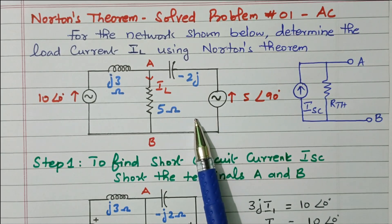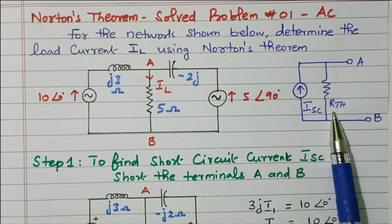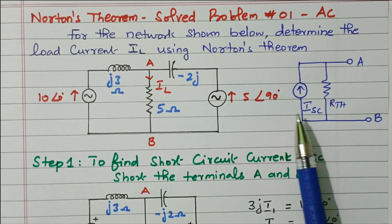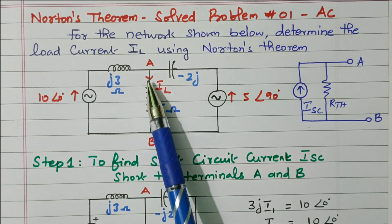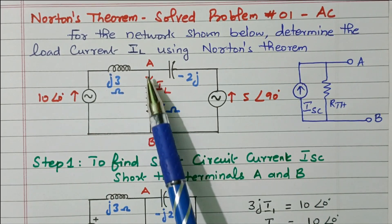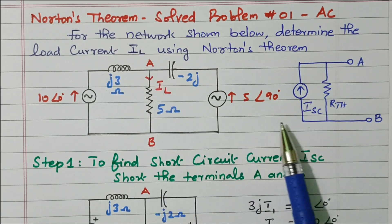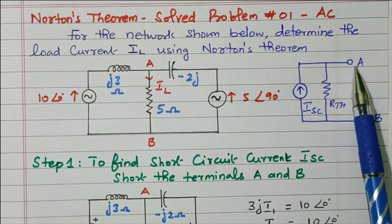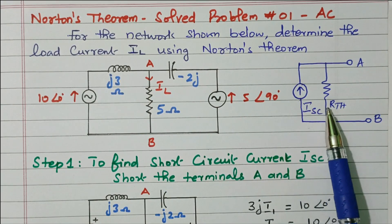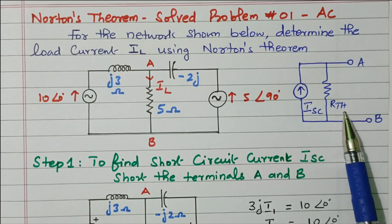Based on Norton's theorem, this complicated circuit is converted into a simplified circuit — that is, a current source in parallel with R-Thevenin. The short circuit current is found by short-circuiting the load terminal AB. R-Thevenin is found by removing all sources and finding the equivalent resistance between A and B. Thereafter, we can calculate the current through the load terminal using the current divider rule.